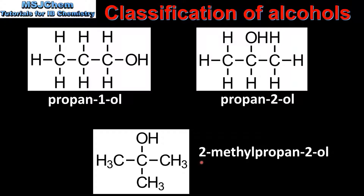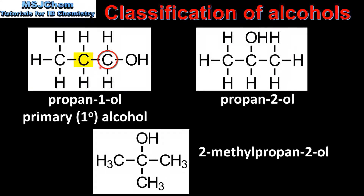Next we'll classify these alcohols as primary, secondary or tertiary. Starting with propan-1-ol, we need to count the number of carbon atoms that are directly bonded to the carbon atom that is bonded to the hydroxyl group. As we can see there is only one carbon atom directly bonded to that carbon atom. Therefore propan-1-ol is a primary alcohol.